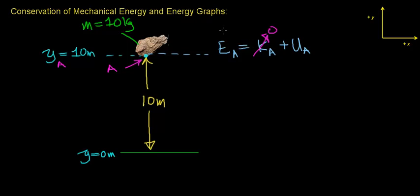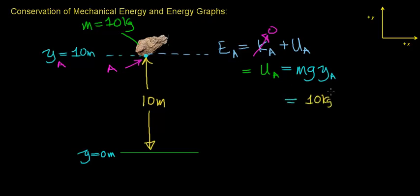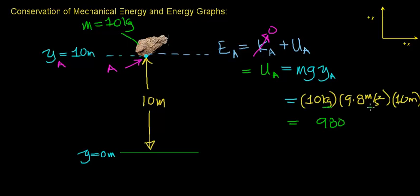The total mechanical energy equals the total gravitational potential energy at this point. The total gravitational potential energy an object has equals the object's mass times the gravitational acceleration on Earth times the total distance the object can fall. This object can fall a total distance of 10 meters, so its gravitational potential energy equals 10 kilograms times 9.8 meters per second squared times 10 meters. When you multiply these numbers out — 10 times 9.8 times 10 — you get 980, and the units work out to joules.